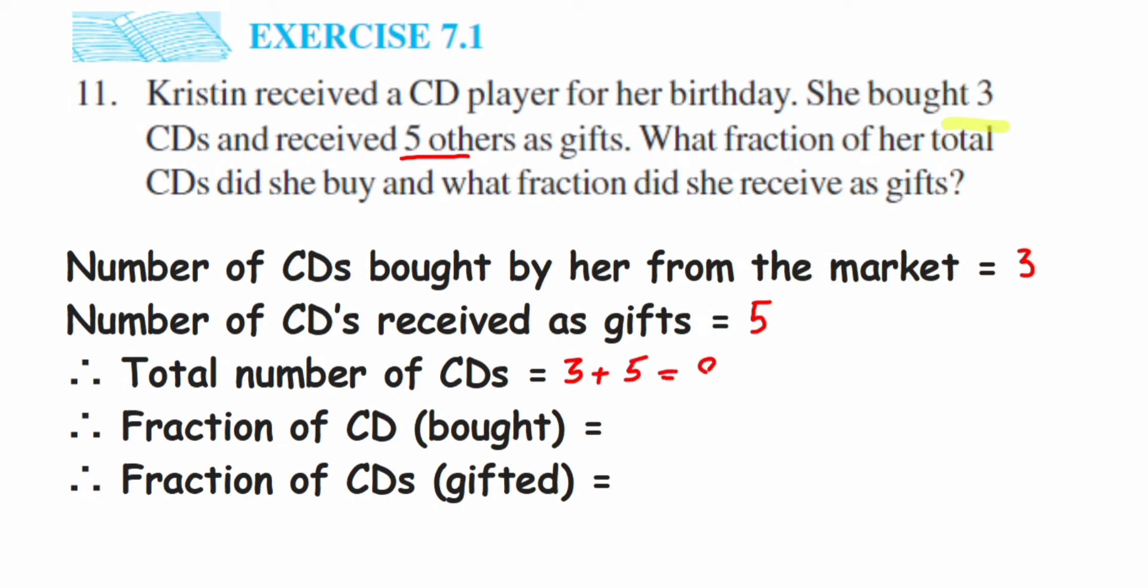So total she has 8 CDs with her. Now in the question they're asking what fraction of her total CDs she buy. So total CDs she bought from the market will be nothing but—we know that total CDs she has is 8, so in the denominator you will get 8.